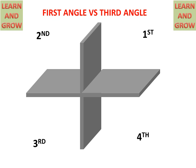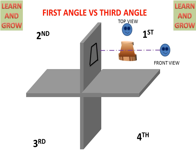We are discussing first angle and third angle projection. In first angle projection, this is our object and this is the observer, so the object lies between the projection plane and the observer. When the observer sees the object from the front, the front view will be drawn on the vertical plane. If the observer sees from the top, the top view will lie on the horizontal plane as two circles. We also use this sign for first angle projection. The front view will be on the top and the top view will be on the below side of the front view.